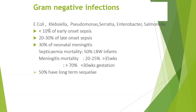Gram-negative infections include E. coli, Klebsiella, Pseudomonas, and Serratia. These account for less than 10% of early onset sepsis, but contribute to 20 to 30% of late onset sepsis and 30% of neonatal meningitis as well.